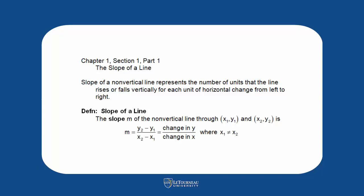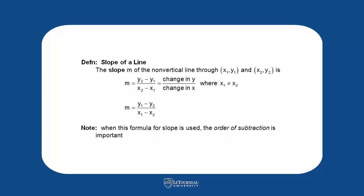You'll remember that the slope of a non-vertical line represents the number of units that the line rises or falls vertically for each unit of horizontal change from left to right. We have the definition there. We have two points: x1, y1 and x2, y2.